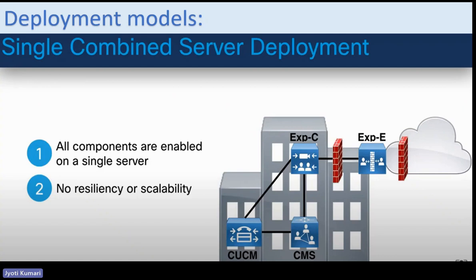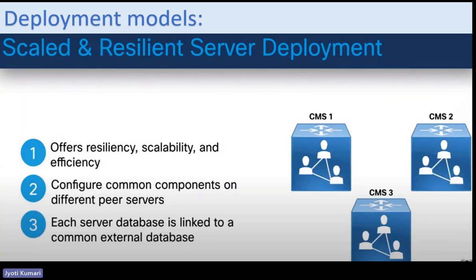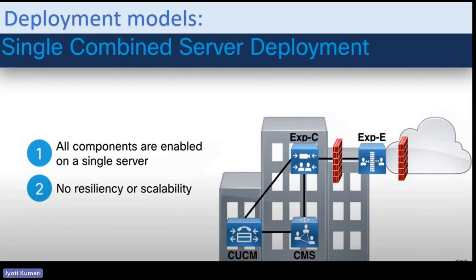There are three different deployment models: single combined, single split, and centralized combined deployment. Before version 3.0, not all deployment models were supported, but since version 3.0 and later, there are two main models. One is single combined and the other is scaled and resilient, which is for redundancy. In single combined, it's a standalone server with no redundancy.